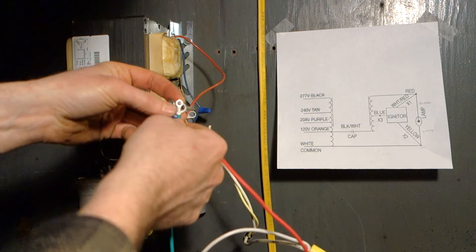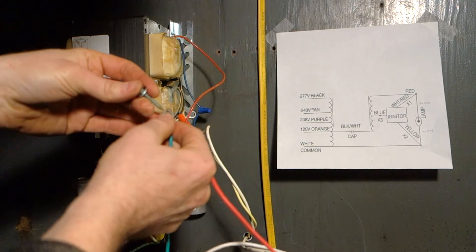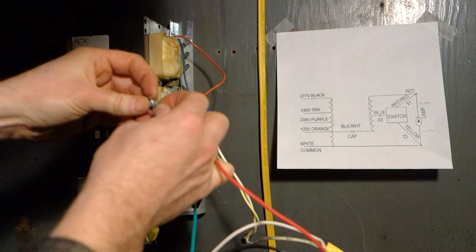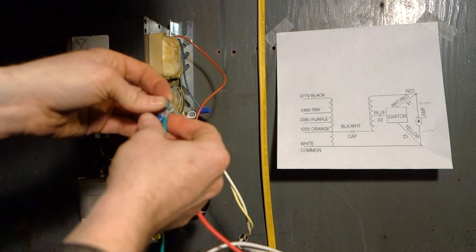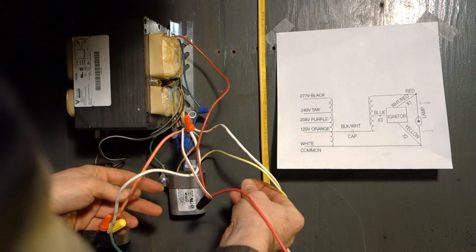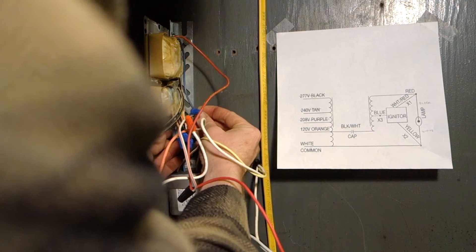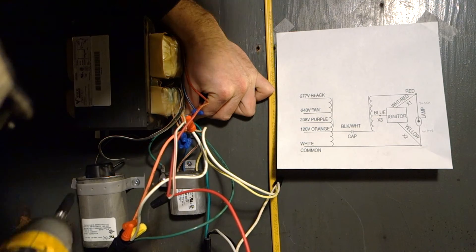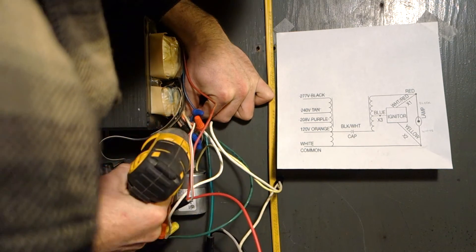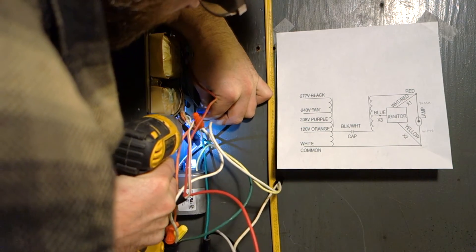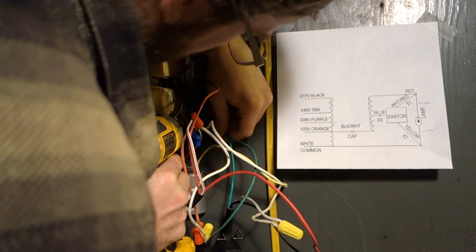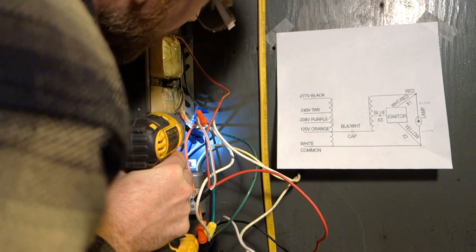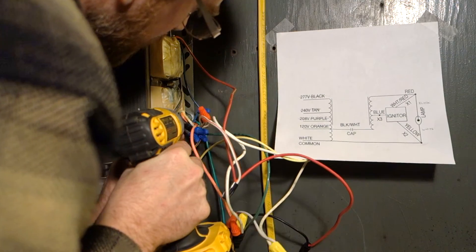So like I said, there's three grounding points that we're going to take care of. This is one, this is kind of small but we'll work it. One, two, and three coming off of the igniter.